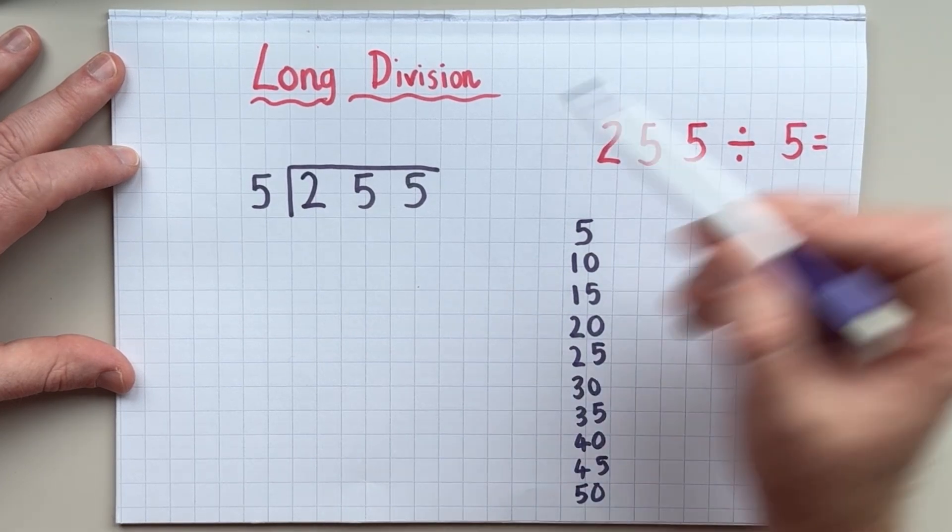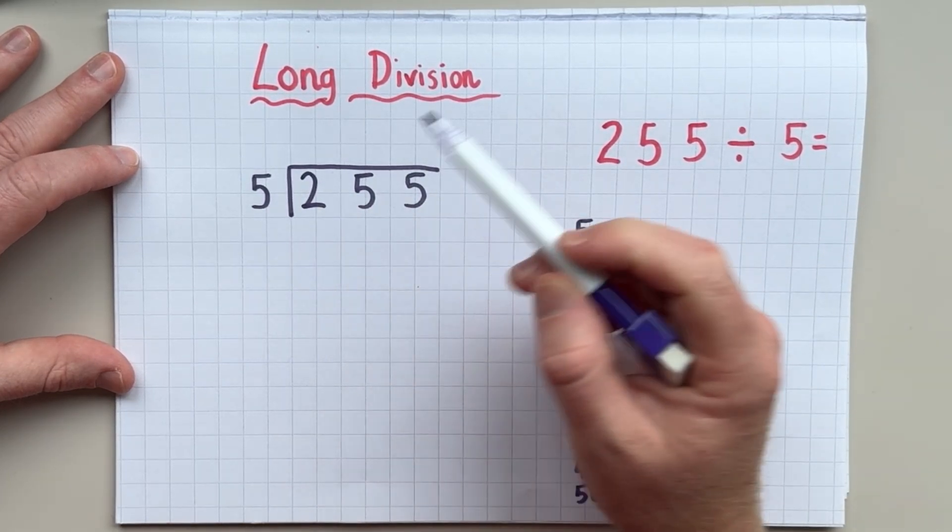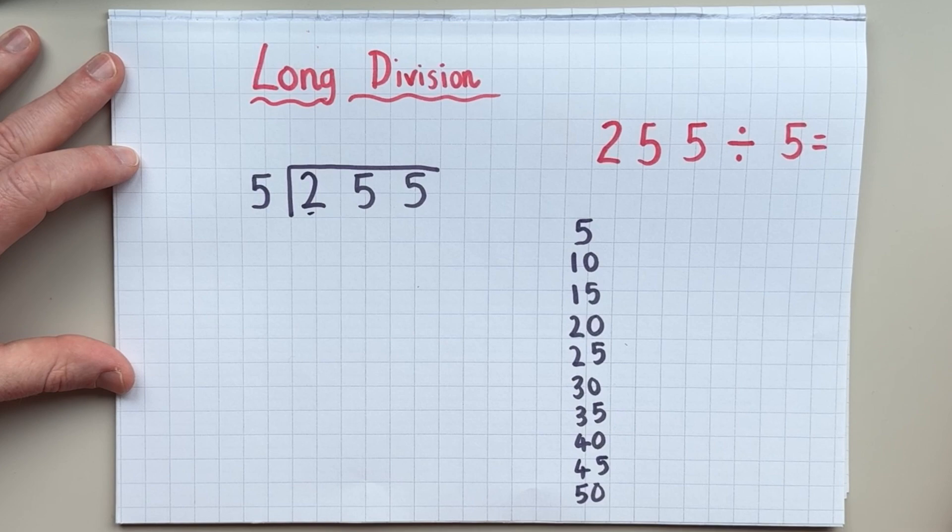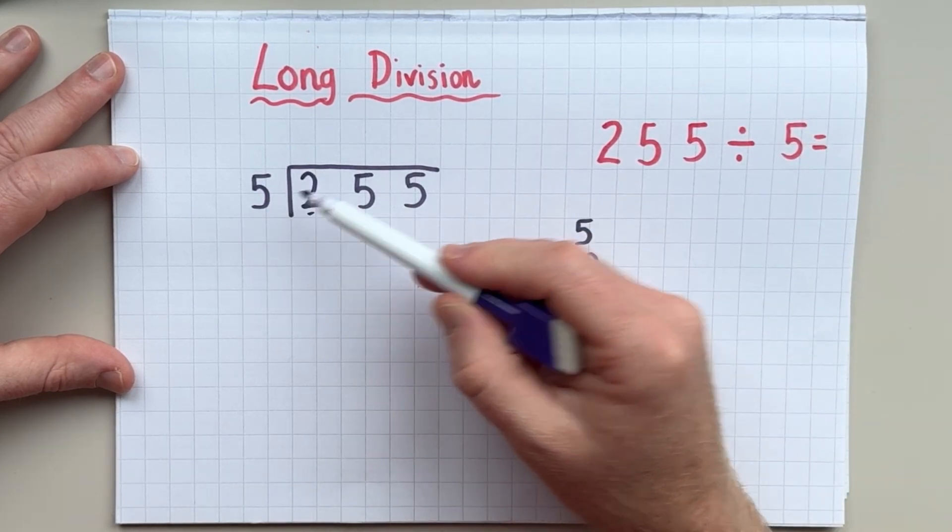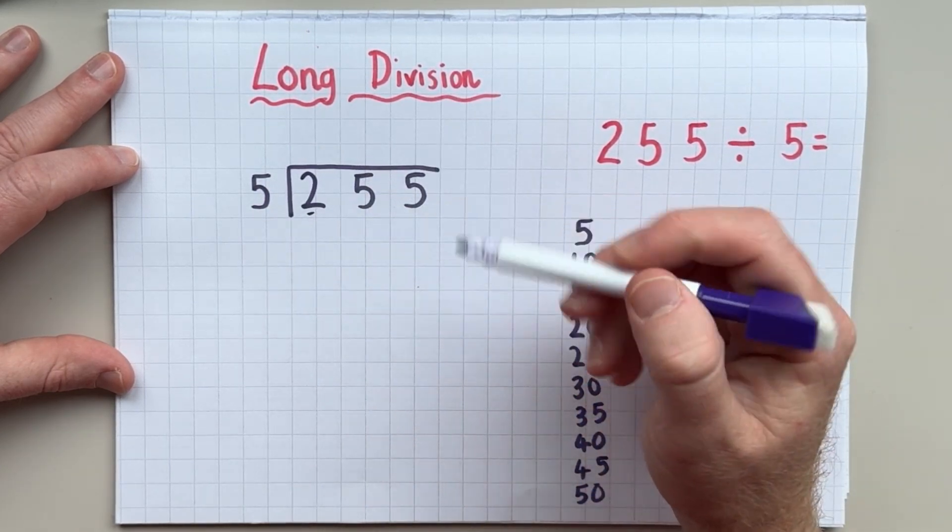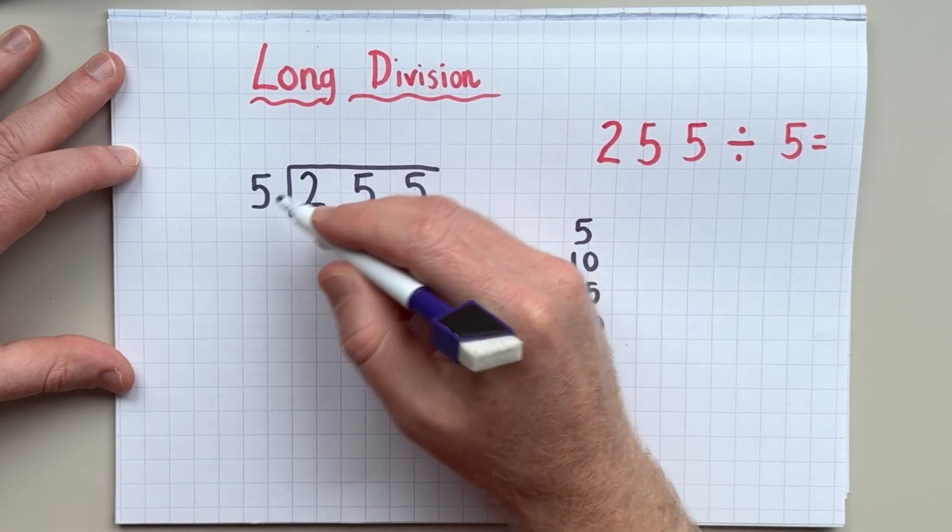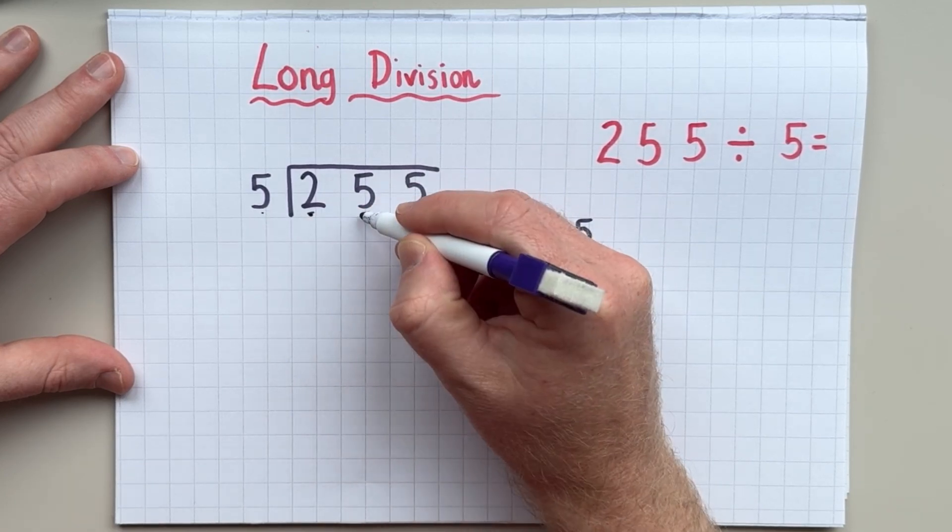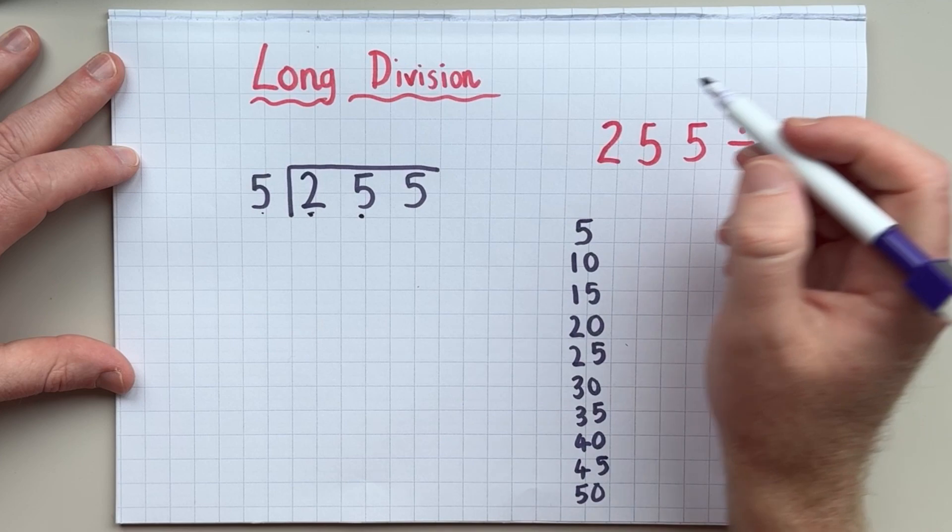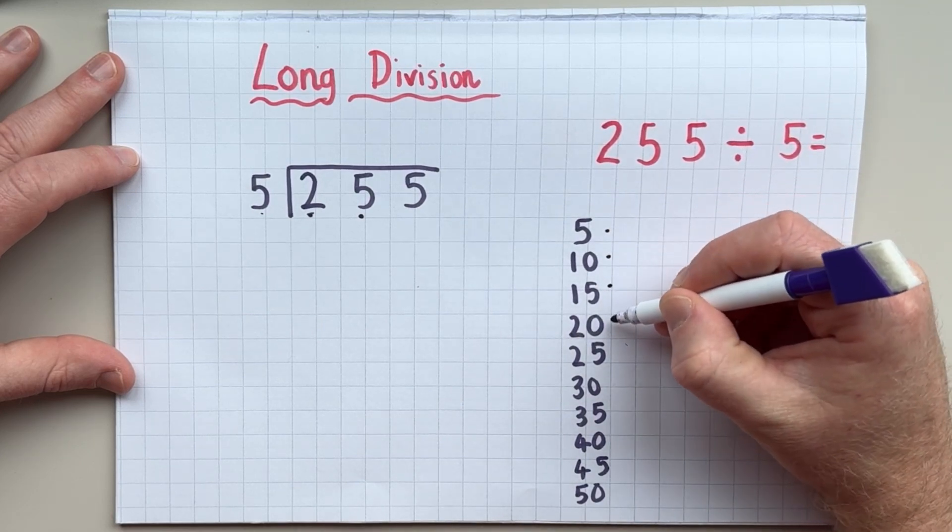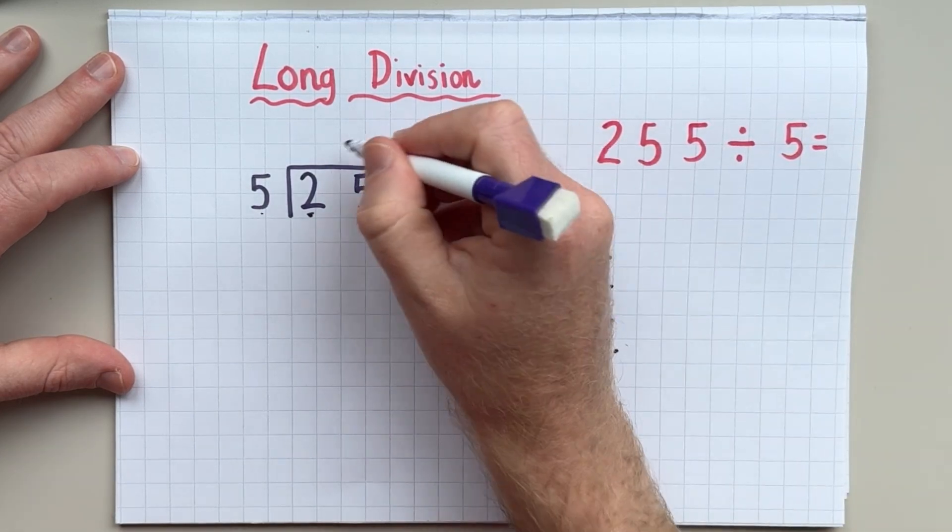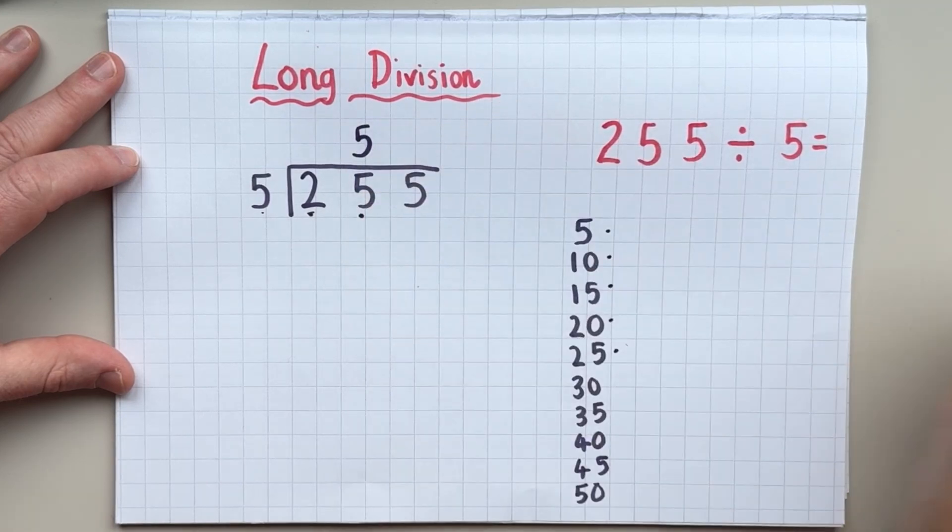So the first thing I'm going to do is I'm going to ask myself how many fives in two. I can't do that. There's not enough. So I'm going to say how many fives in 25. And I know that there is one, two, three, four, five fives in 25.